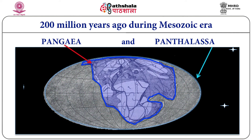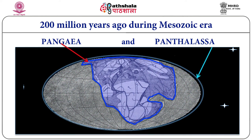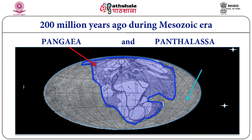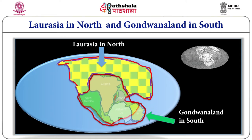Wegener said that 200 million years ago during the Mesozoic era, Pangaea began to separate into two proto-continents. The northern continent, Laurasia, included North America, Europe, Greenland, and Asia excluding India. The southern continent, Gondwana land, included South America, Africa, India, Australia, New Zealand, and Antarctica. These two proto-continents were separated by the Tethys Sea. The exact boundaries of these two domains are still in question, and opinions are divided on the date of the splitting of Pangaea.